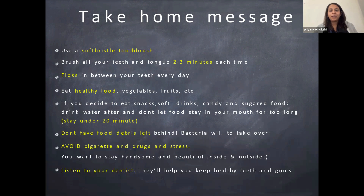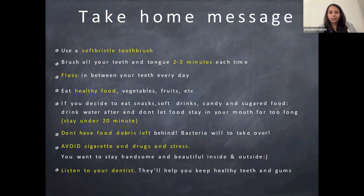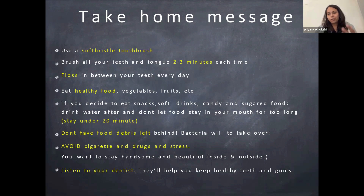The major takeaways: use a soft bristle brush — look for the word 'soft' on the packet — and take about two to three minutes to brush your teeth each time; try setting a timer on your phone or watching a short video to help. Floss every day, even if you are missing some teeth. Try to eat healthy foods like vegetables, limit sugary foods as much as possible, and don't let sugary food stay in your mouth too long — avoid sipping sweetened coffees all day. Avoid cigarettes, drugs, and stress. Listen to your dentist — we are always here to help you keep your smiles healthy.